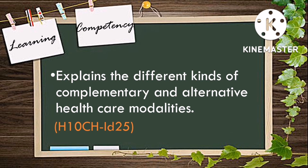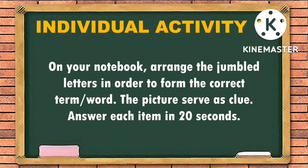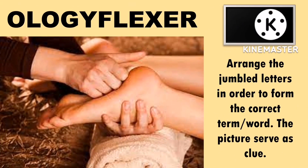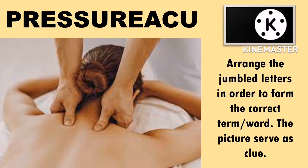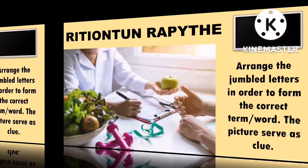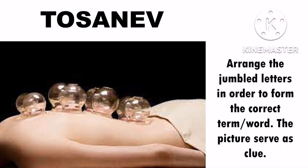To activate your prior knowledge, let's start with this activity. On your notebook, arrange the simple letters in order to form the correct term or word. The picture serves as a clue. Answer each item in 20 seconds. Let's check your answers to see if they're correct.